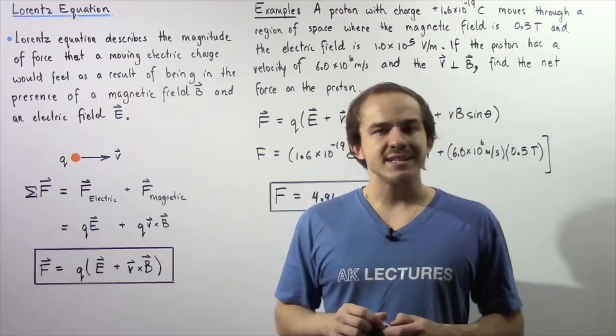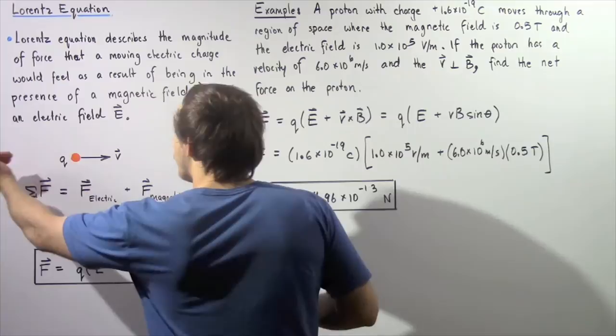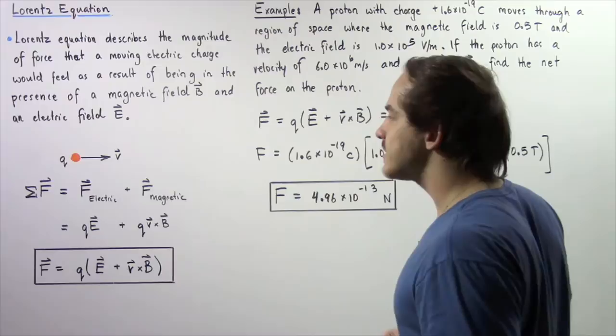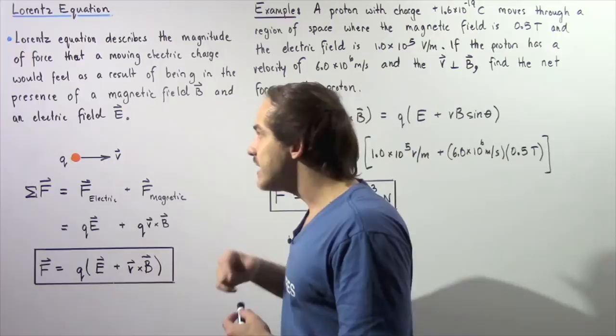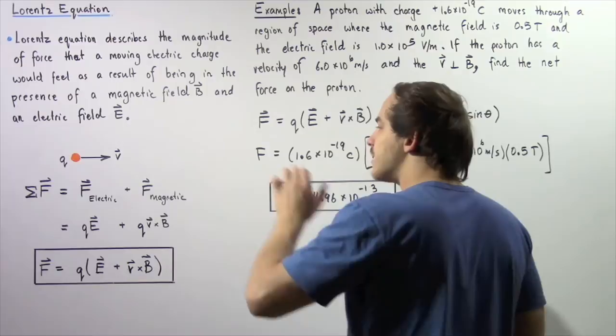So let's suppose we have the following charge Q, which is moving with the velocity V in the positive direction along the x-axis. This charge is in the presence of a magnetic field given by B, as well as an electric field E that is not shown. So let's suppose we have these two fields in this region.